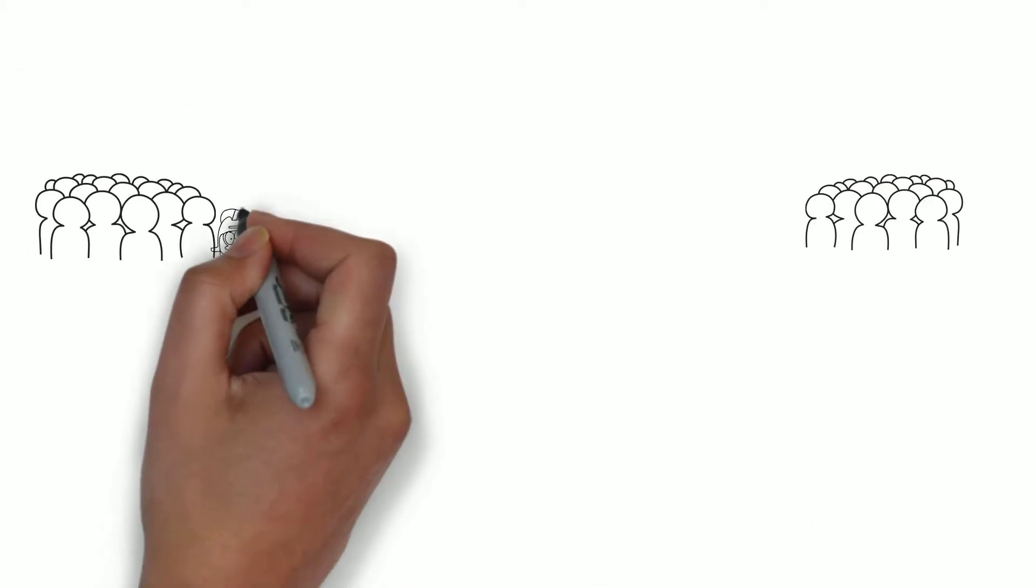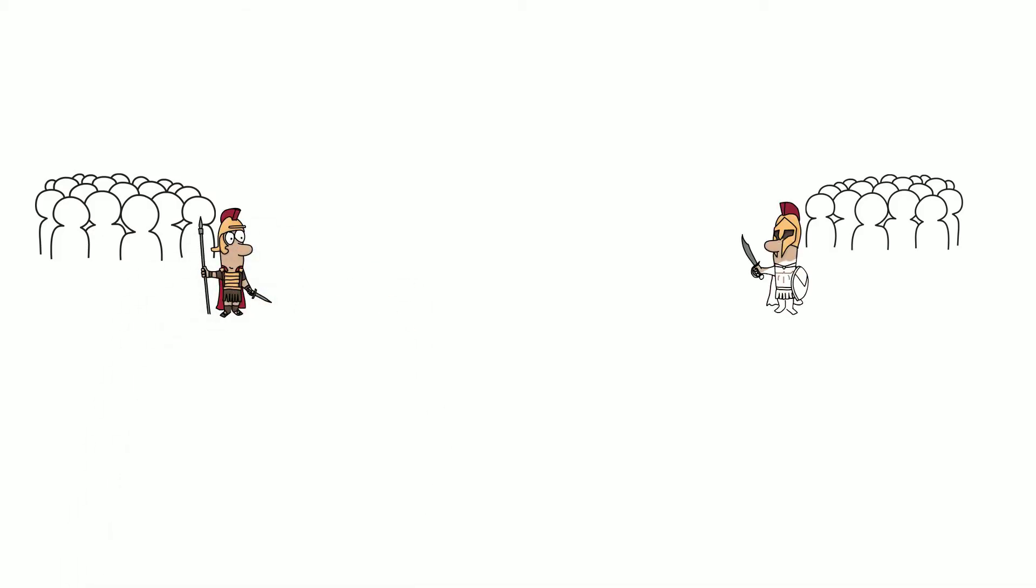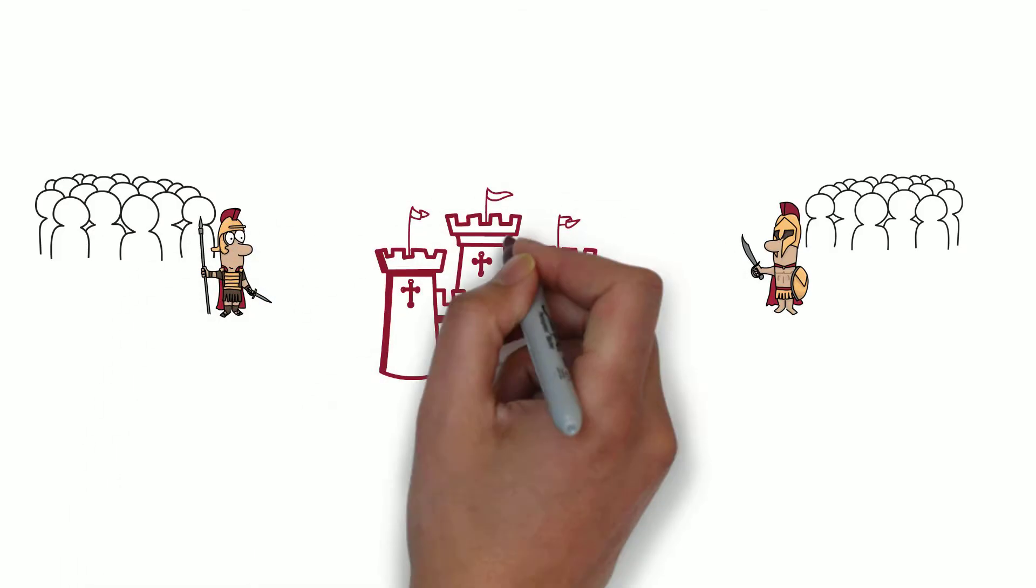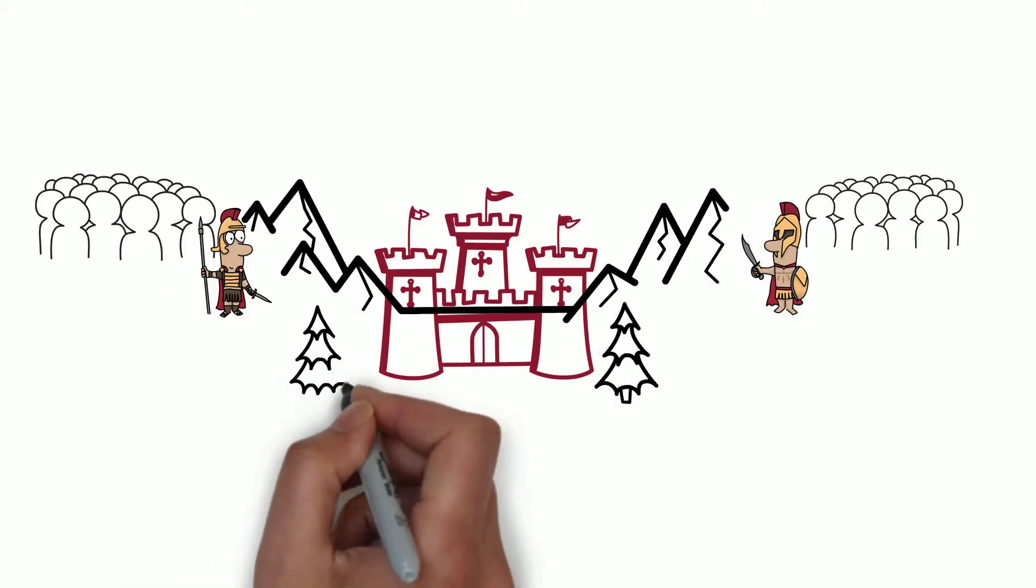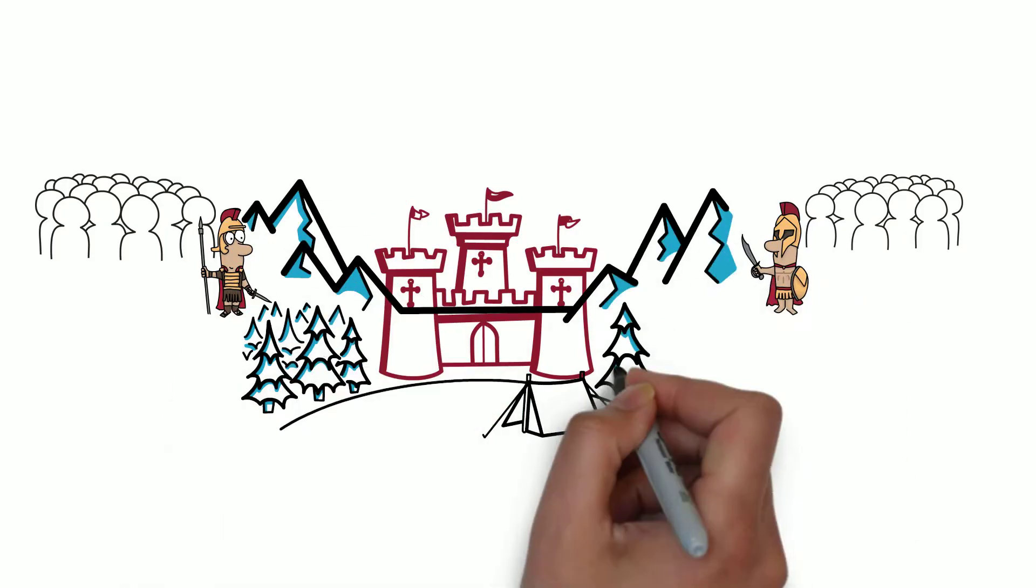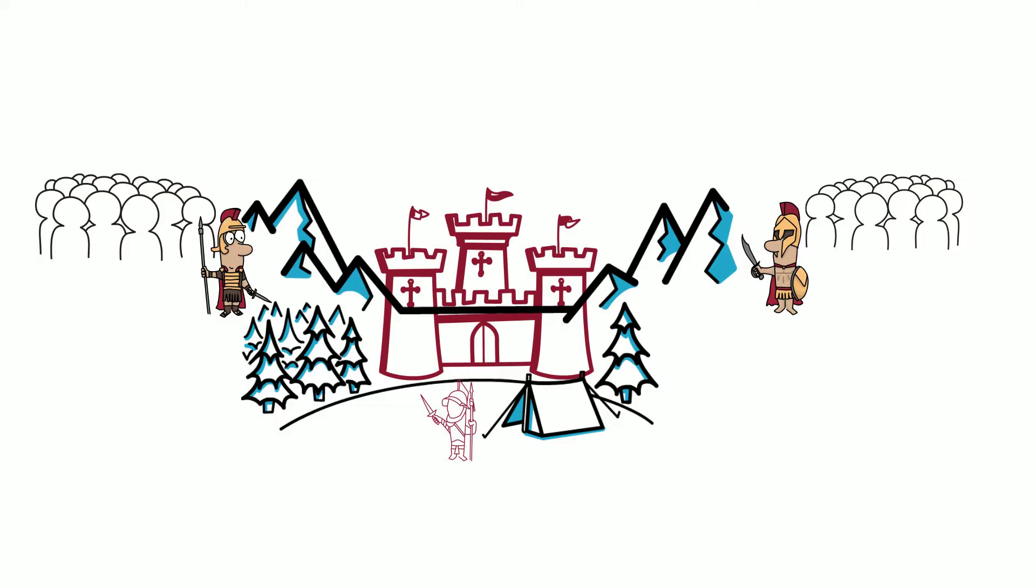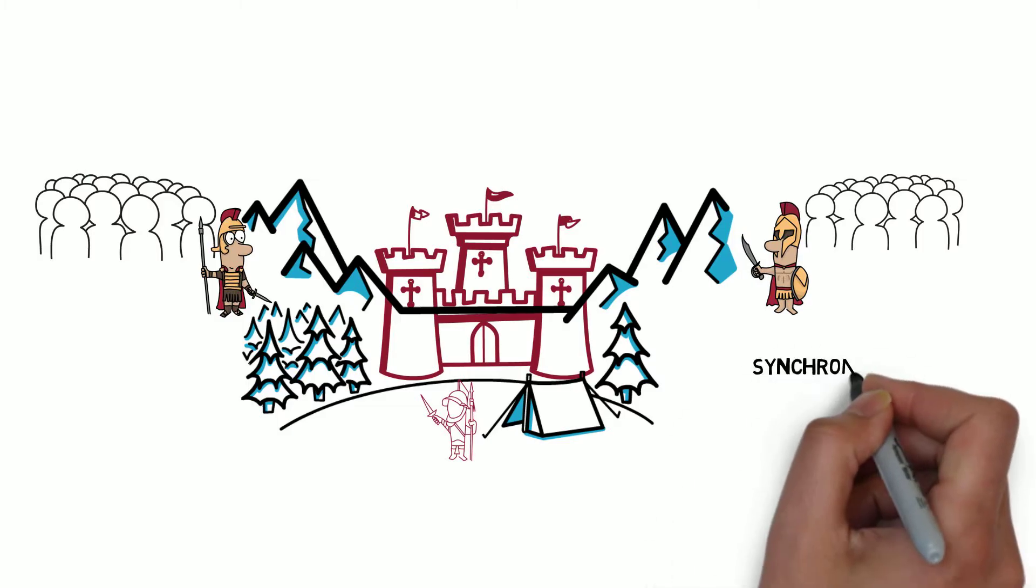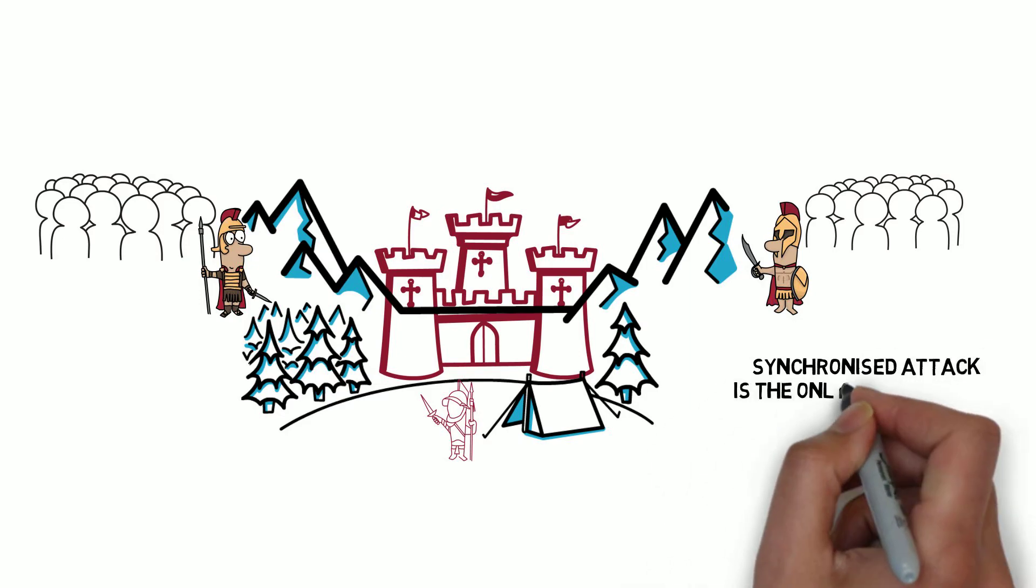Let's imagine two armies led by two generals planning an attack on a common enemy. The enemy's city is in a valley and has a strong defense that can easily fight off a single army. The two generals have to communicate with each other to plan a synchronized attack, as this is their only chance to win.